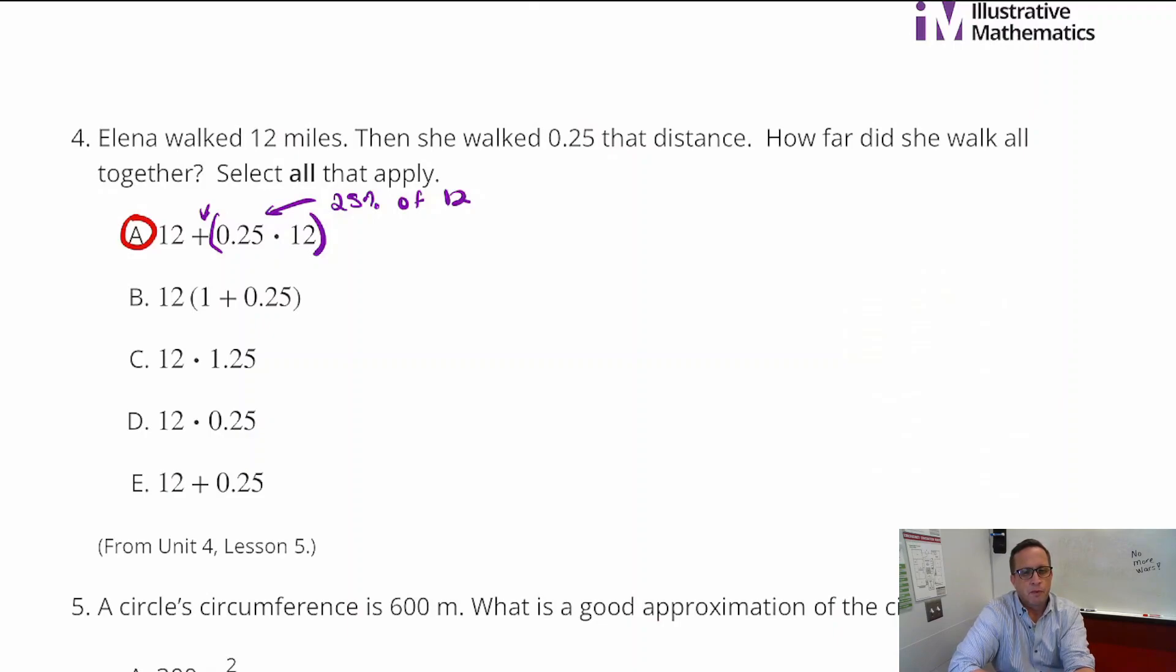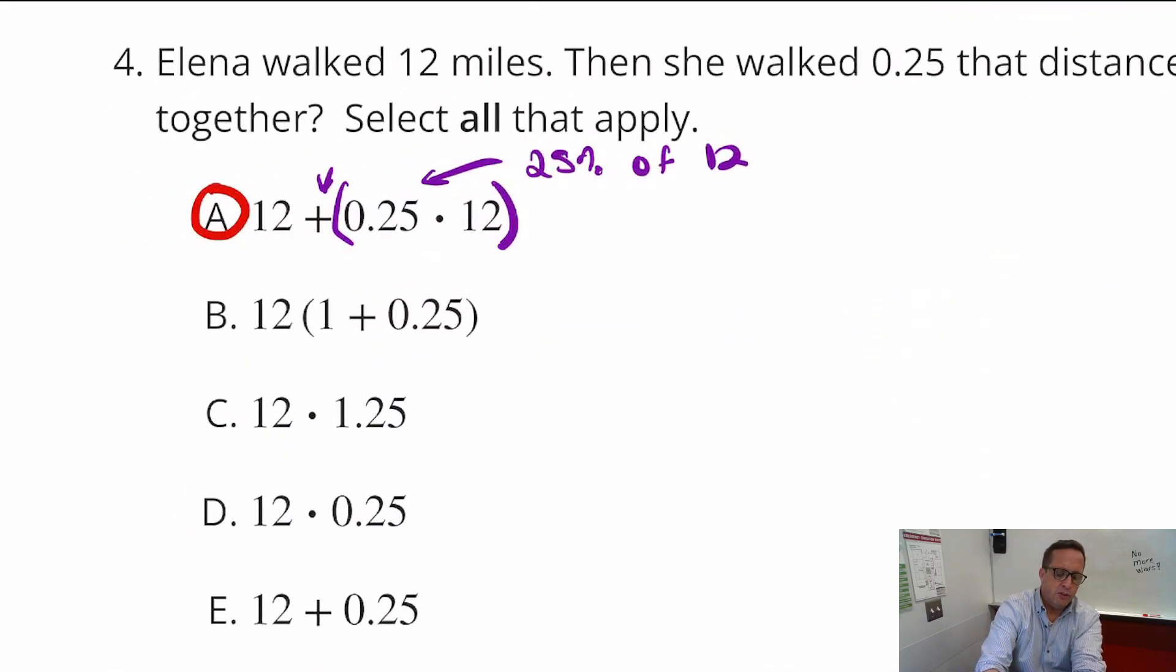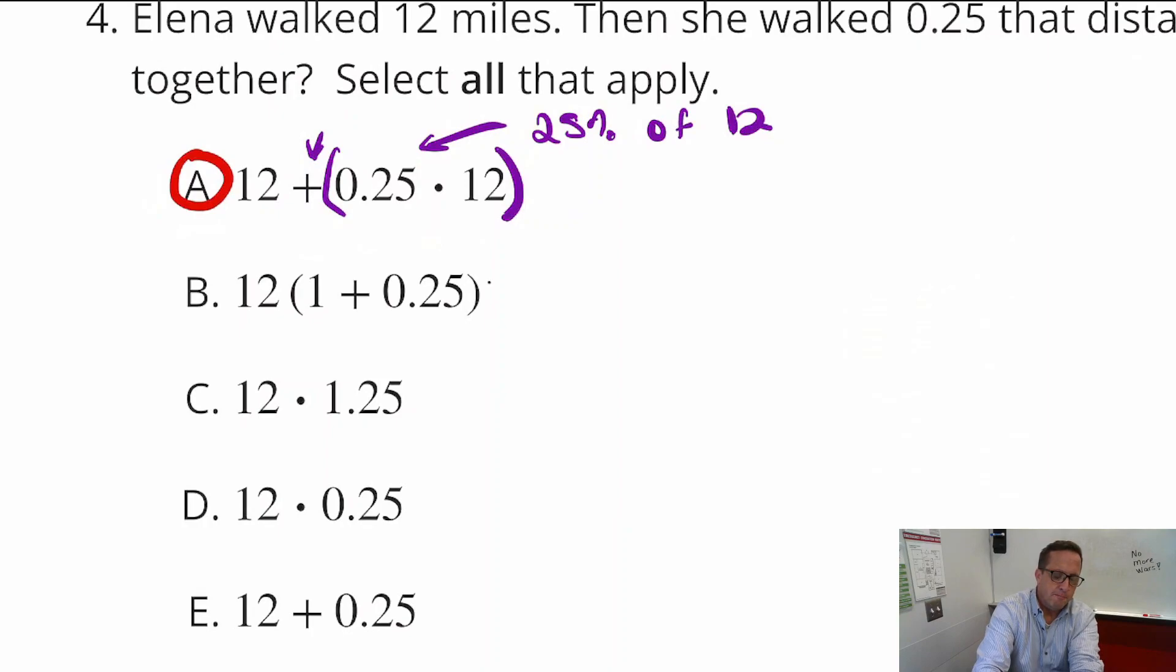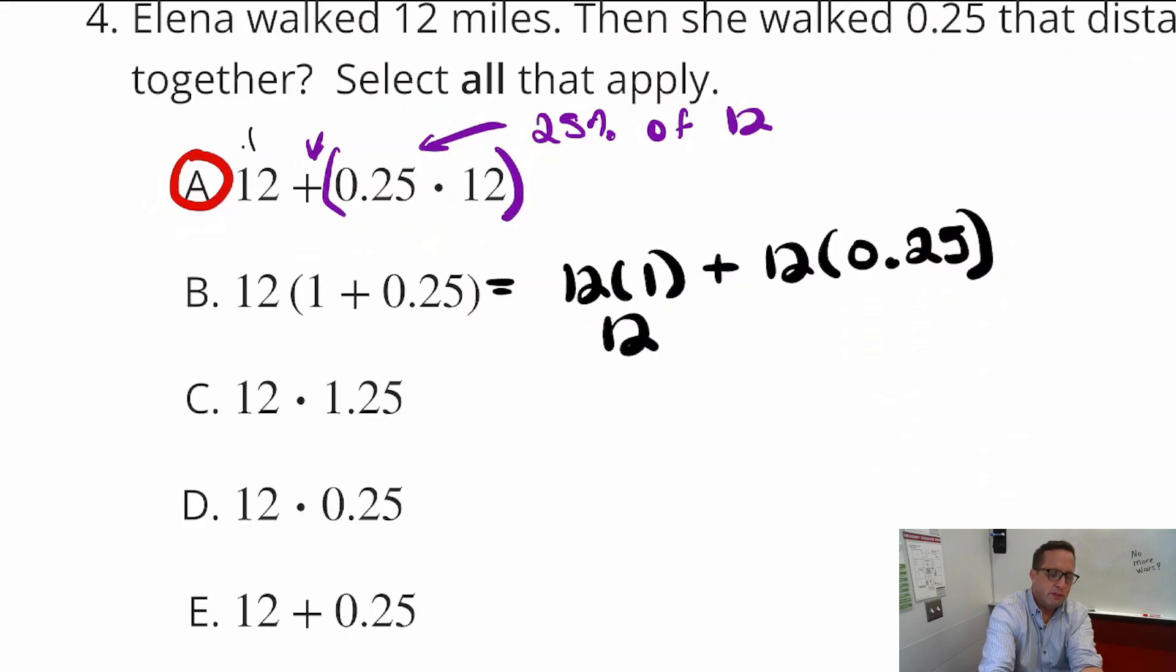And in the next one there. If we distribute that, if we distribute what we've got there, we're going to do 12 times 1, which is 12. Plus 12 times 25%. Now, 12 times 1 is 12. Look at that right there. And then, 12 times 25%. It's going to look like that. So, B is a viable option.